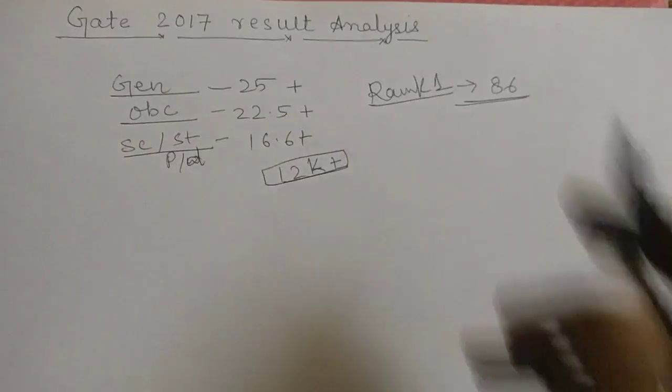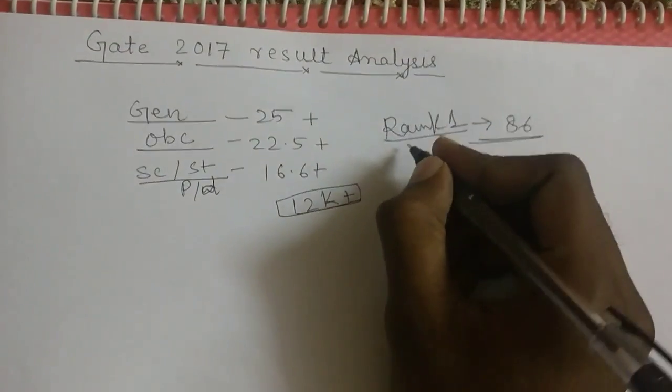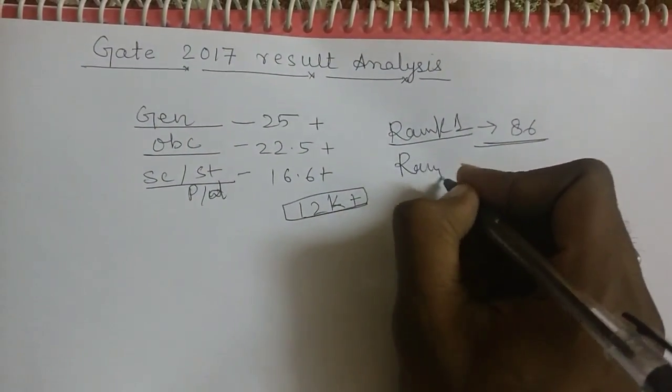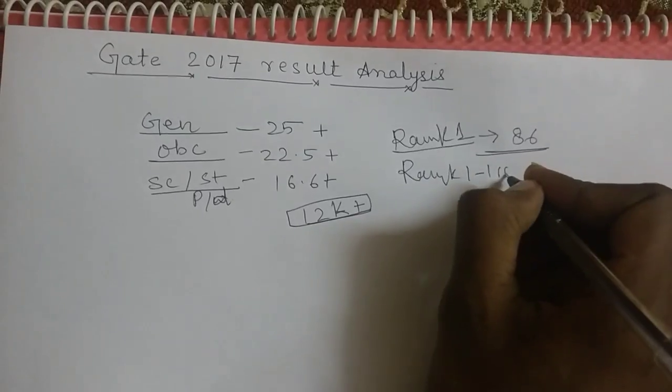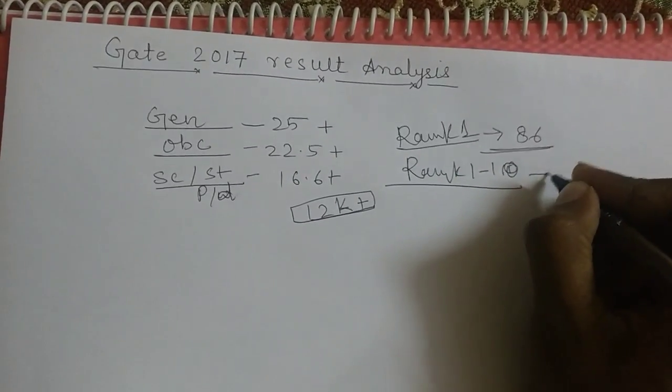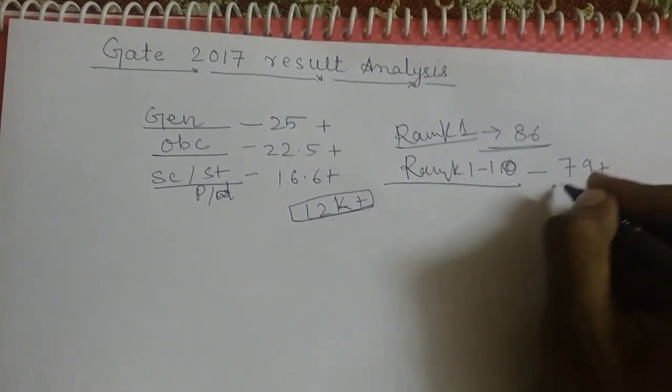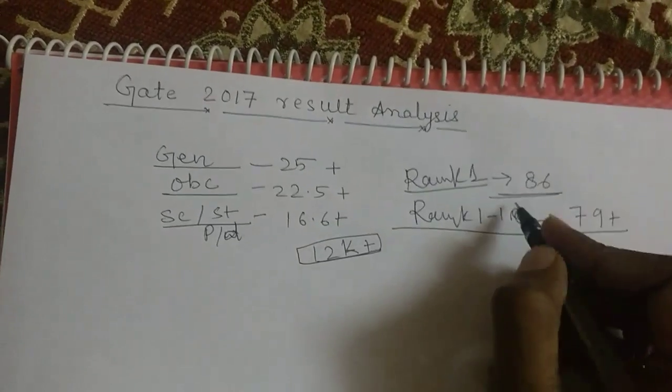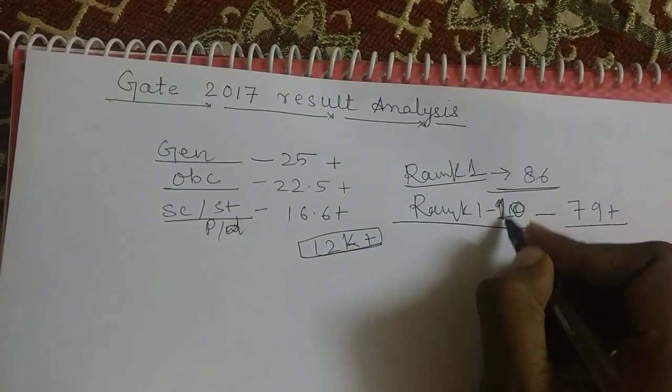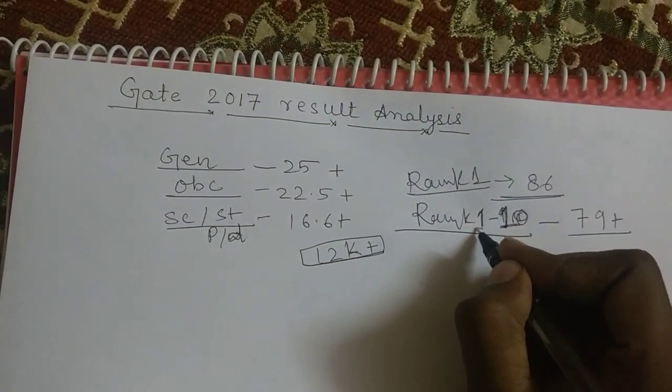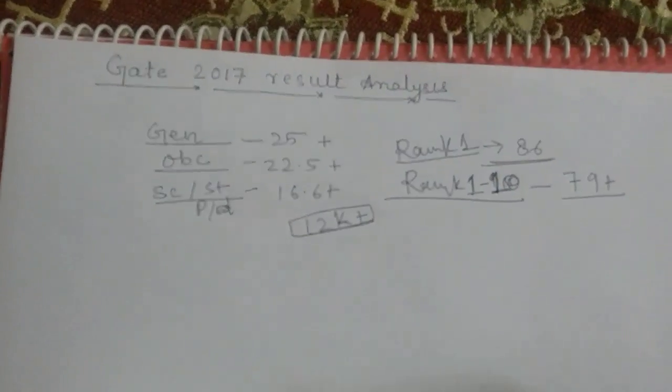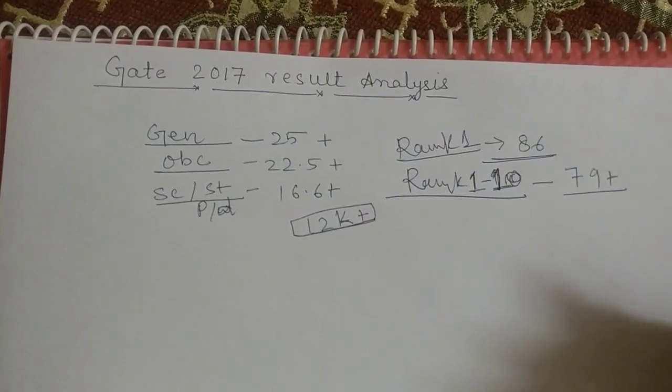So this year to get in top 10 rank 1 to 10, you need to get 79 plus marks, because this year the marks were little more than the previous year.